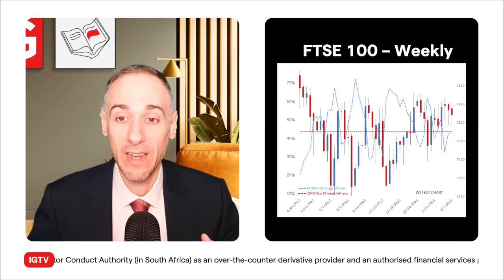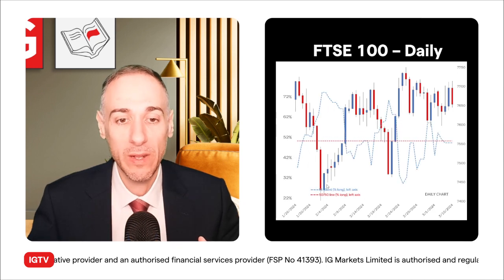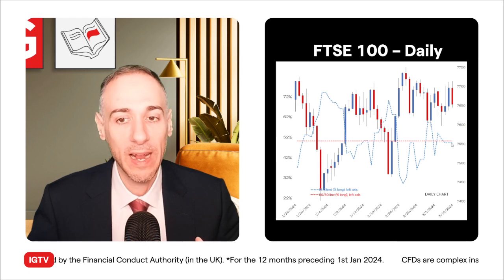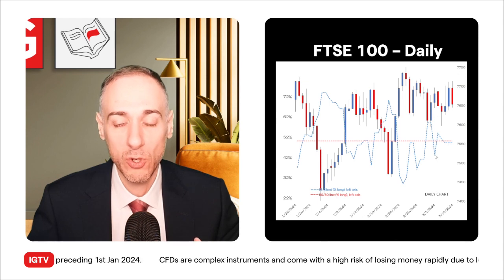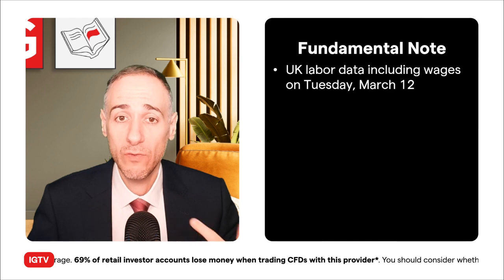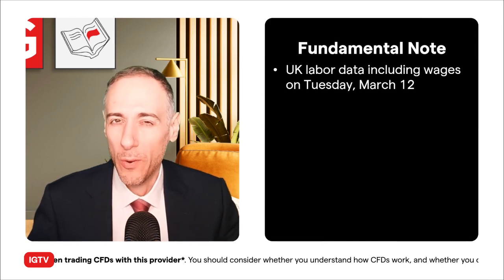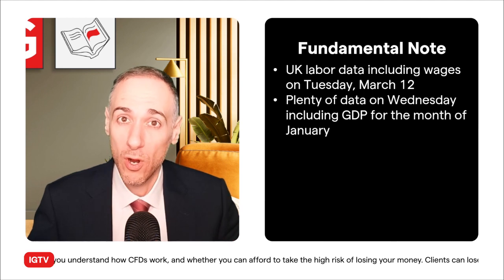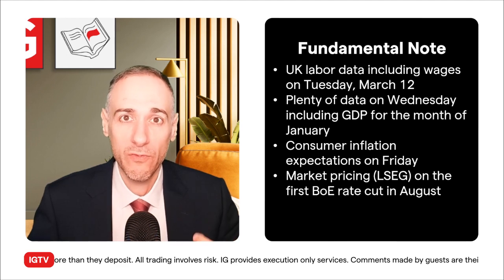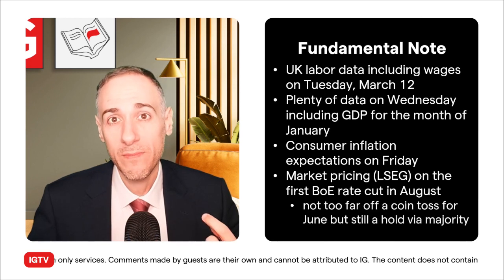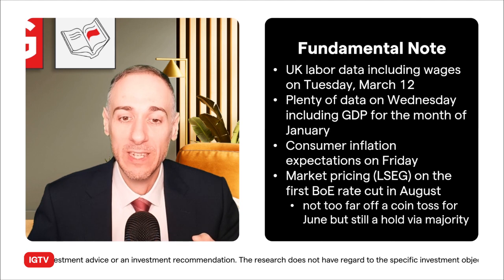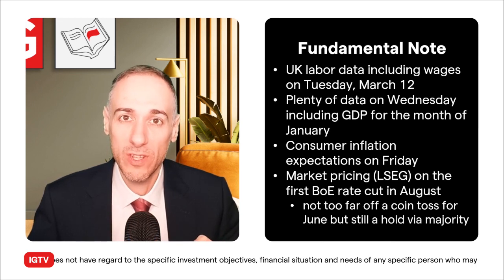Plotting IG client sentiment onto the chart — the blue dotted line shows percent long on the left axis; the red dotted line is the 50/50 level. Above that line is majority buy, below is majority short. The FTSE has mostly stayed in majority buy territory. On the daily timeframe it's clearer: every time price drops, sentiment goes majority buy; range trading has been aggressive. Last week started majority sell, then on the pullback it flipped to majority buy, then back to majority sell on the gains. For fundamental considerations this week: UK labor data including wages on Tuesday, GDP for January on Wednesday — expectations are for expansion after a contraction — and consumer inflation expectations from the Bank of England on Friday. Market pricing anticipates the first BOE rate cut by a decent majority in August, with June still possible but close to the middle.